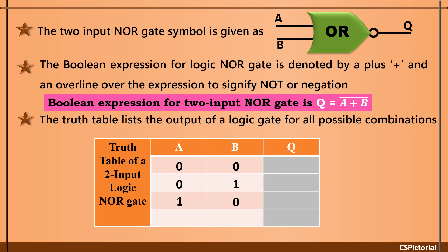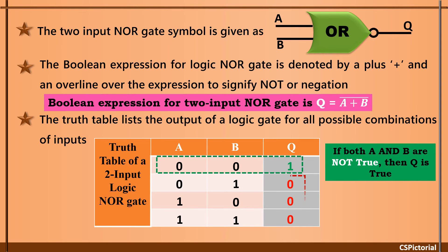This is the truth table of a two-input NOR gate. The output Q is 1 only when all inputs are 0. Q is 0 for all other input combinations.